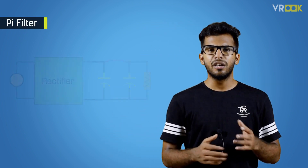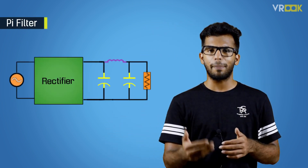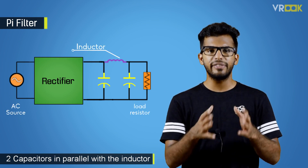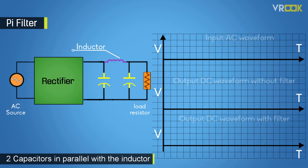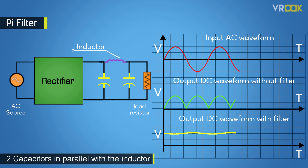There is another type of filter called a pi filter. Here we use two capacitors in parallel with the inductor. Through this setup, we get a DC signal which has a very tiny amount of ripple.